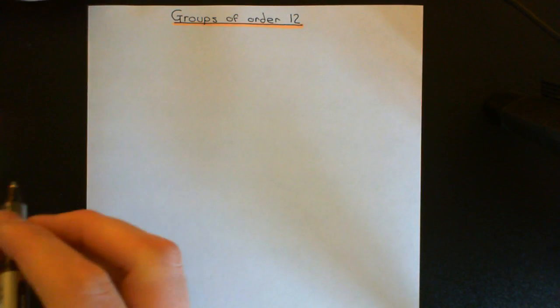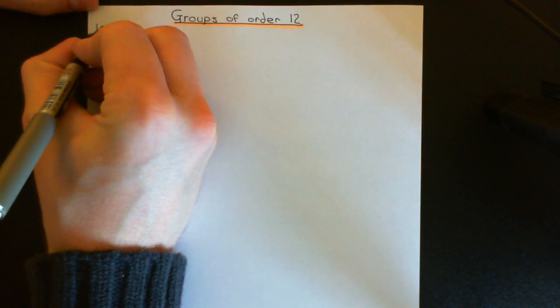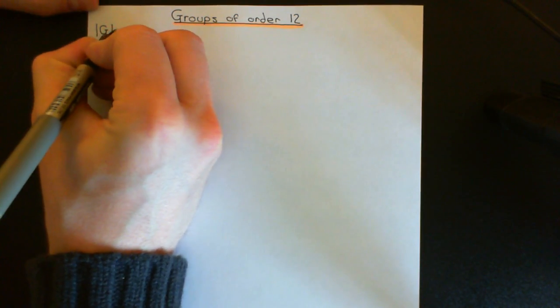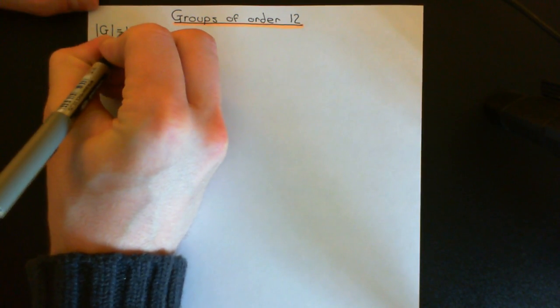Welcome to this next video in the playlist on group theory. In this video, what we're going to study is groups of order 12. So we're going to have some finite group which we'll call capital G, and what we know about capital G is that its order is equal to 12.